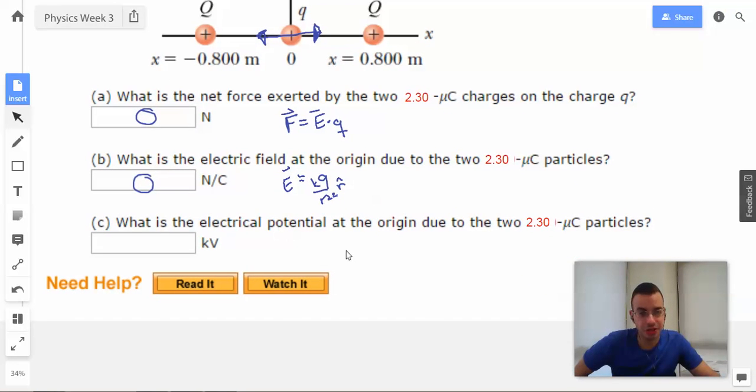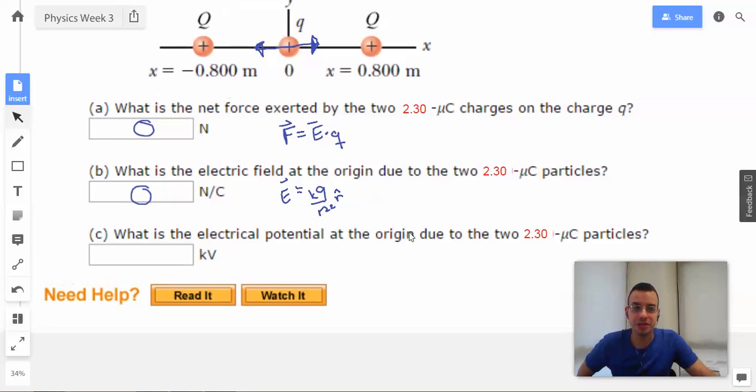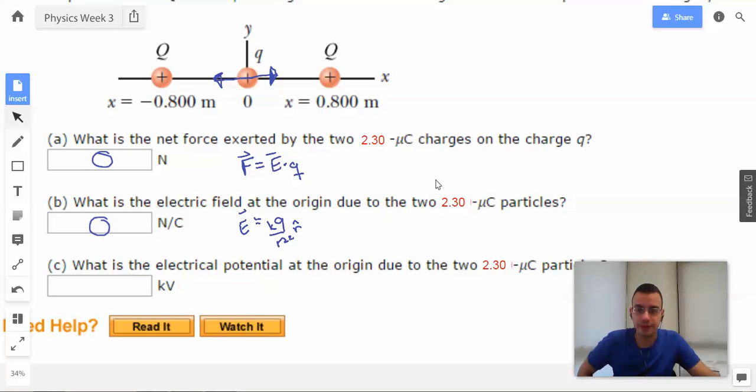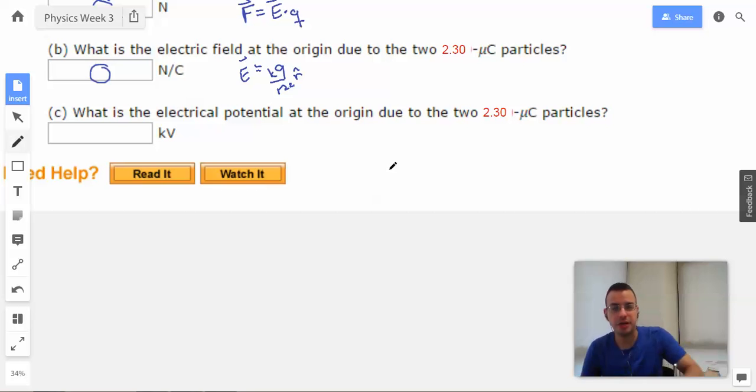What is the electric potential at the origin? Now this part's different. Electric potential is a scalar. With scalars, they don't cancel like vectors do. I'm going to have to do some math on this one. Electric potential V = KQ/R.